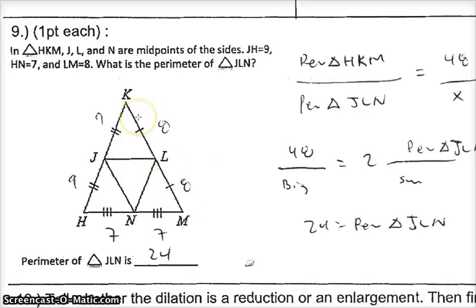Well, this problem is talking about the mid-segment. The mid-segment there has a scale factor of two. So if you look at this, it says what is the perimeter of J-L-N? That's a smaller triangle. So if you wrote the perimeter was 48, I gave you two points out of four because you found the perimeter of the big triangle, and you didn't see that they're asking for the smaller triangle.